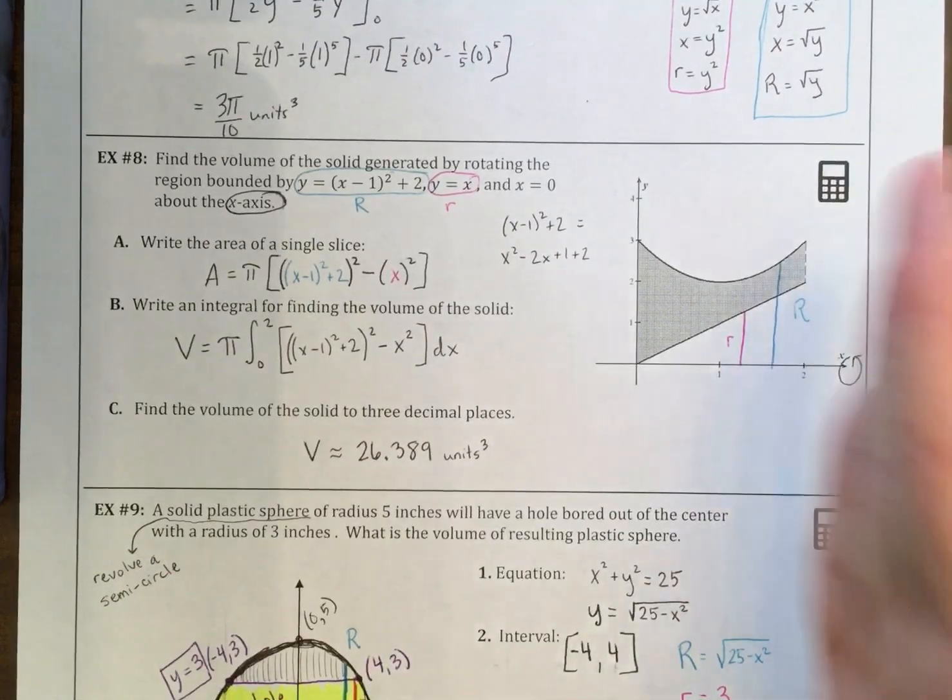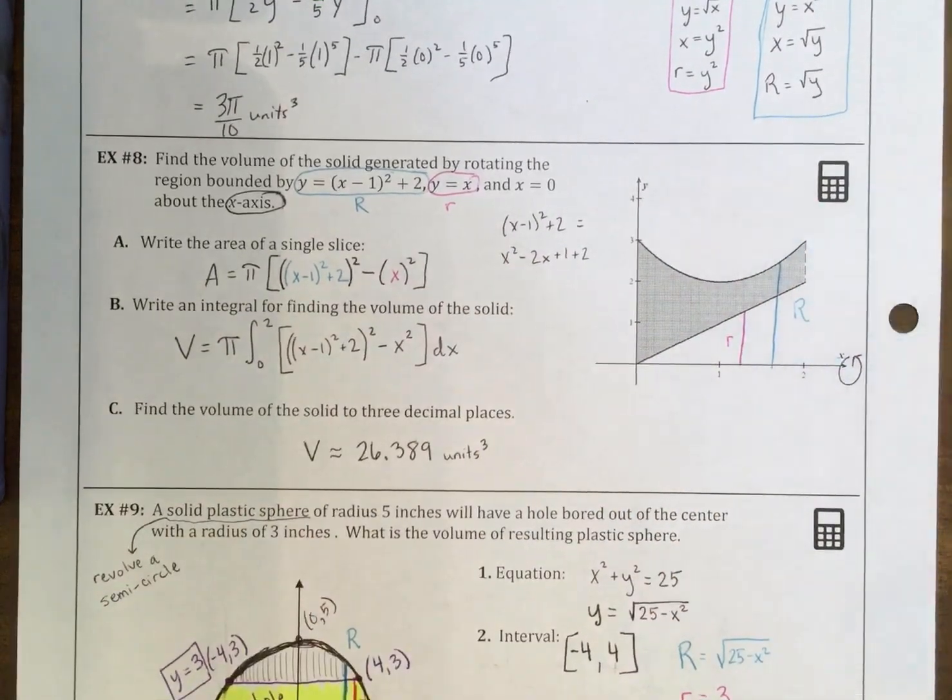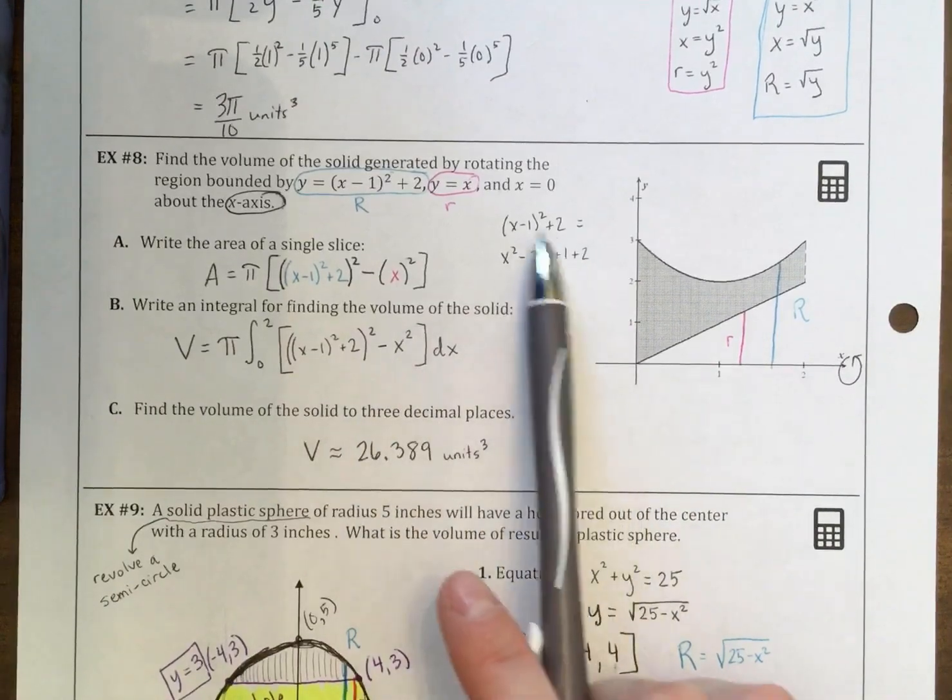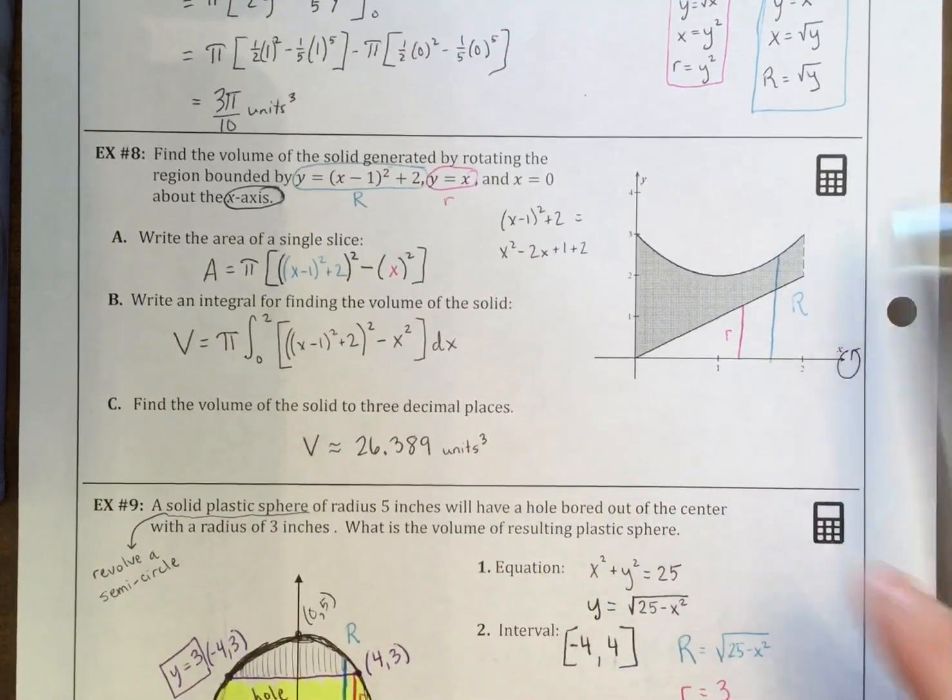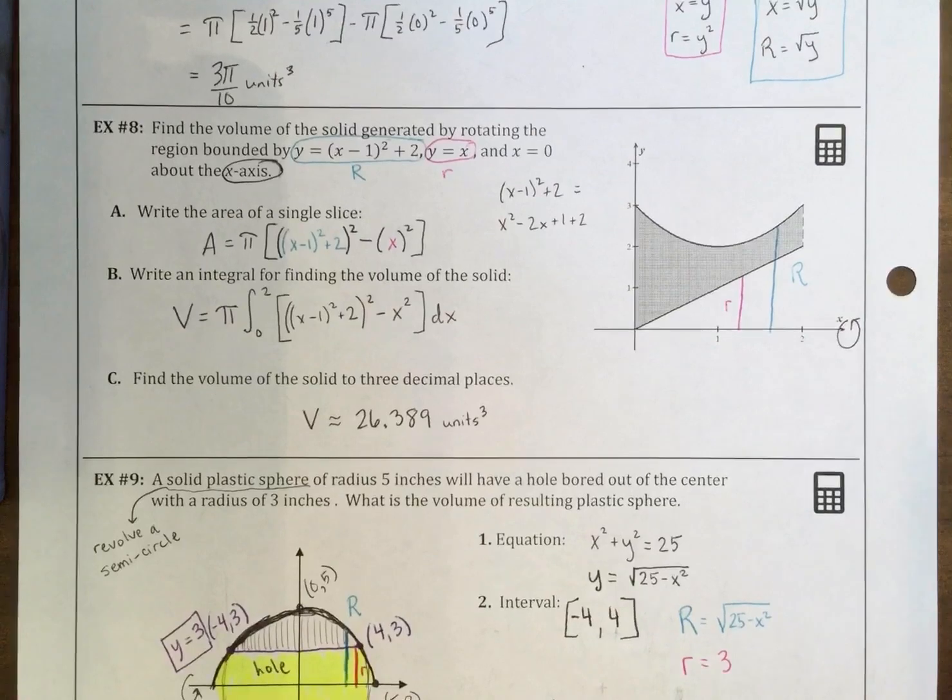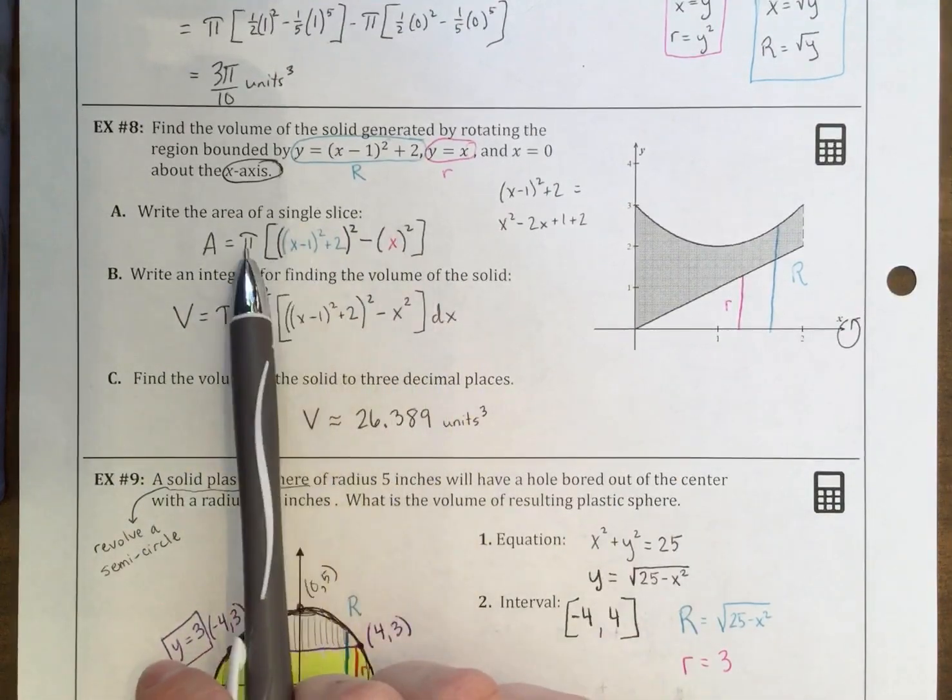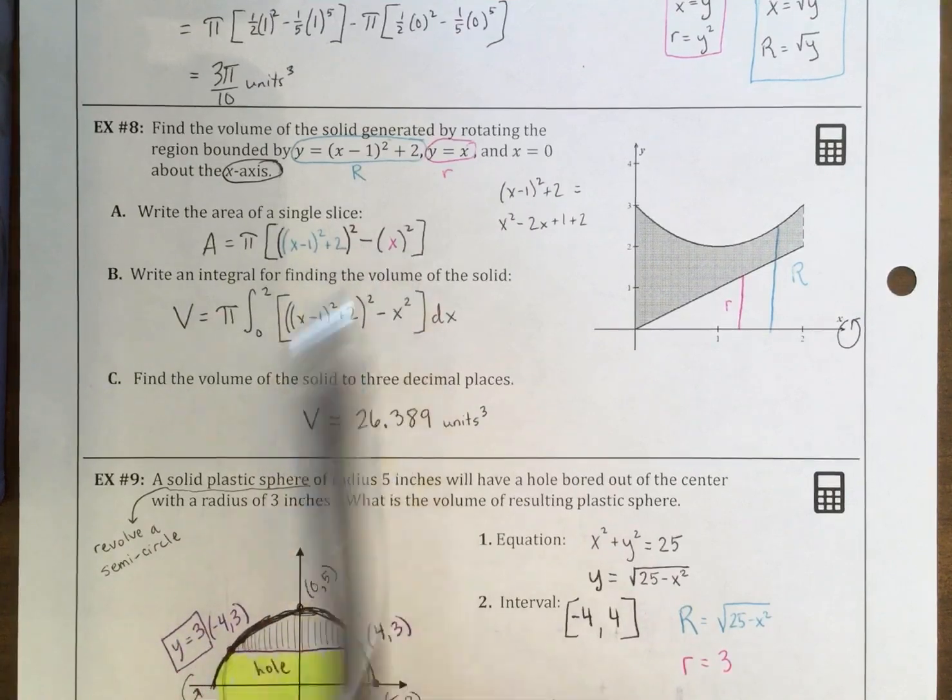So when we slice it, we are going to be getting washers, not discs. I tried simplifying this down, but since this is a calculator problem, there's really no point in doing that. So write the area as a single slice. We have pi, big R minus little r.